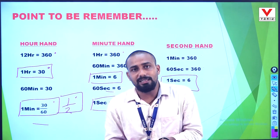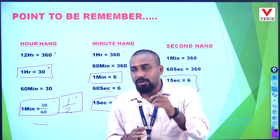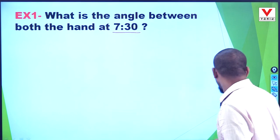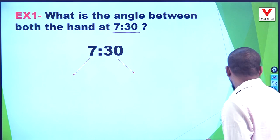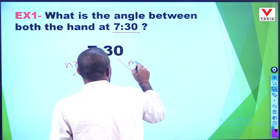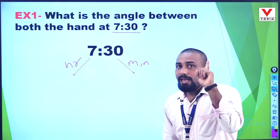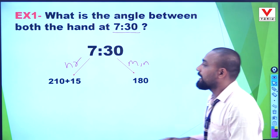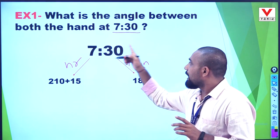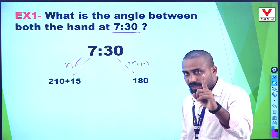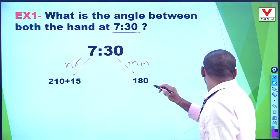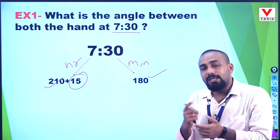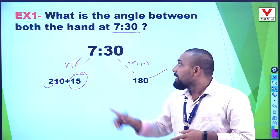I will show you how to use these values with an example. Let's go to the first example — find out how many degrees of angle the hands create. Here, for 7:30, we know the hour hand and minute hand positions. The time is 7:30.